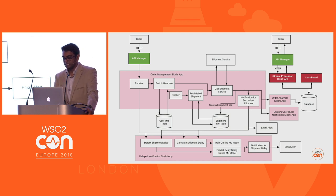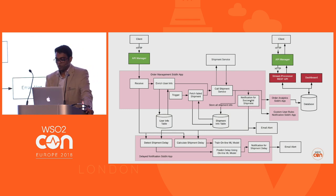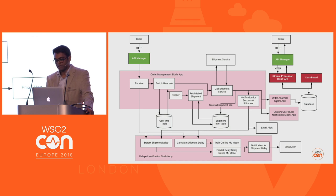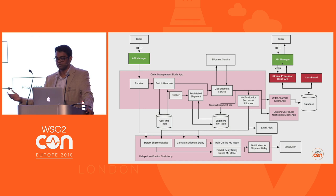If it is a successful shipment, we have to send an email alert notification. At the same time, we also store this information so that we can analyze it — storing into a database, showing it in a dashboard. We are also exposing this information through a REST API such that systems can understand how it is behaving: how many shipments are pending to be delivered, how many have already been delivered. All of that information can be passed through API manager to external clients.